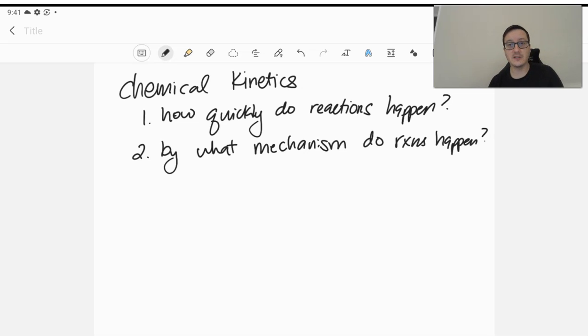First off, how quickly do reactions happen? How can we analyze the speed at which reactions are taking place? And with that information, we can go to a more important question, which is by what mechanism do reactions happen? By knowing how quickly things are proceeding, that will give us very valuable insight into how reactions are taking place.